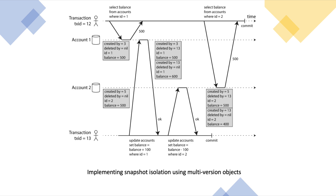Whenever a transaction is started it is given a unique, always-increasing transaction ID. Whenever a transaction writes anything to the database, the data it writes is tagged with the transaction ID of the writer. Each row in a table has a 'created_by' field which contains the ID of the transaction that inserted that row into the table.